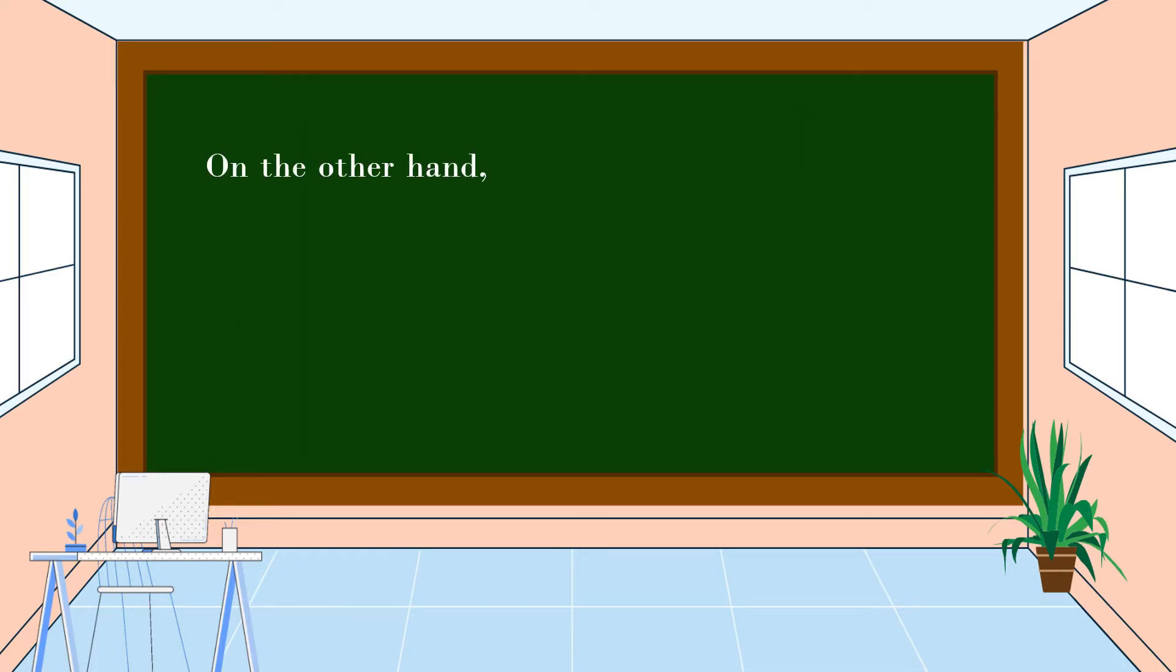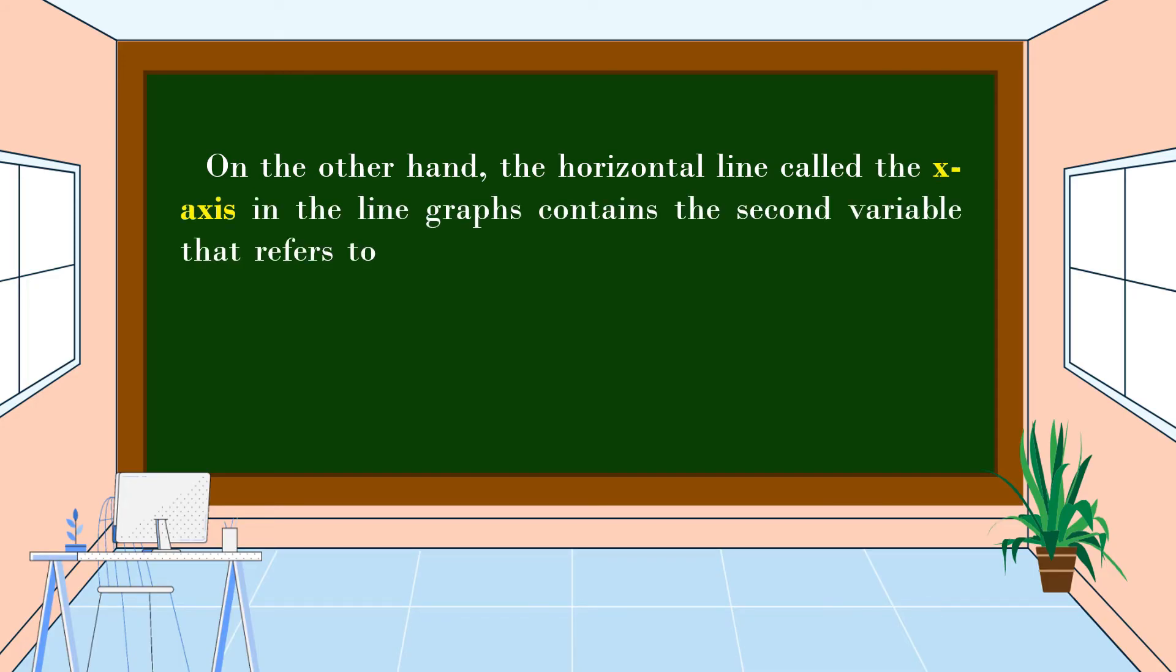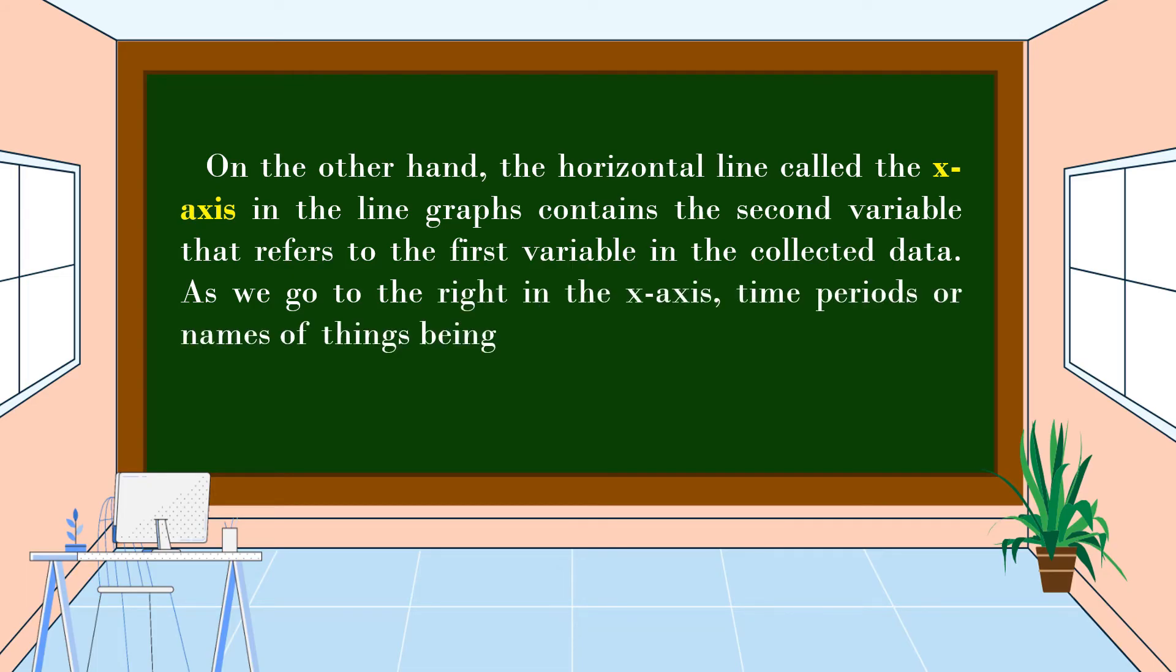On the other hand, the horizontal line called the x-axis in the line graph contains the second variable that refers to the first variable in the collected data. As we go to the right in the x-axis, time periods or names of things being compared are enumerated. In our table presented, the x-axis is the sport.